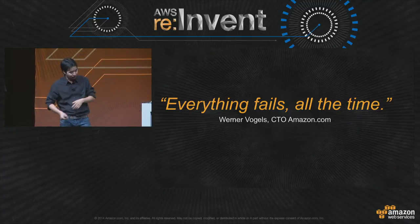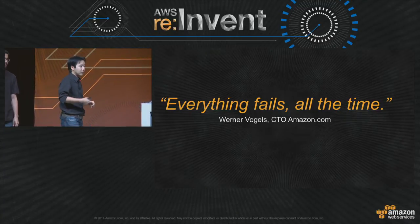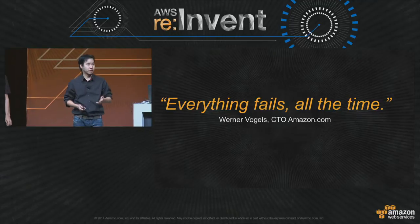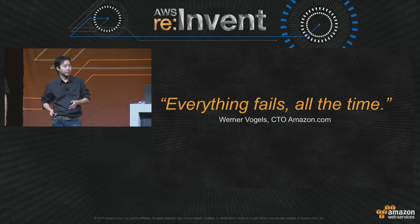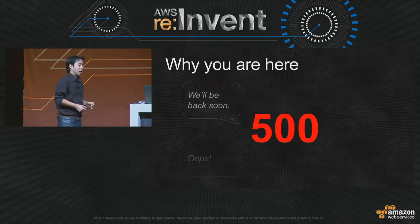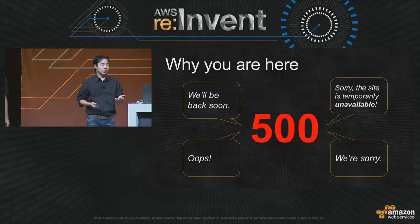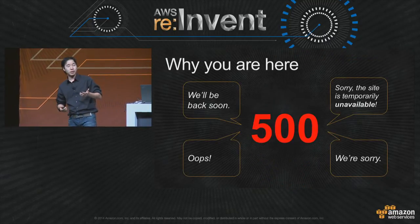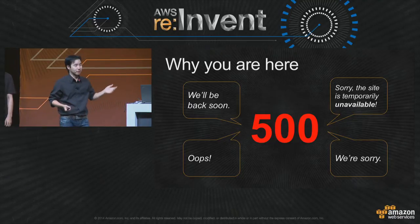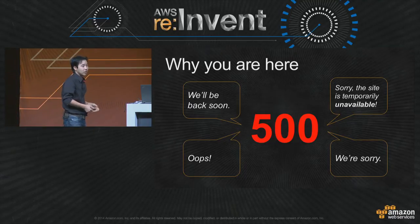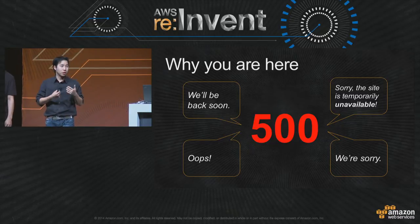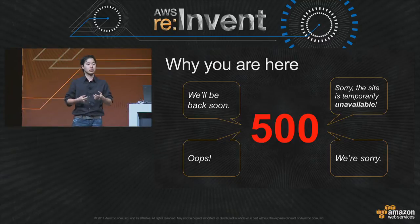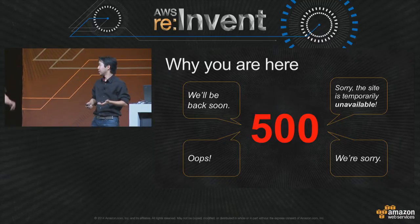If you think about it, your application is in danger of suffering a failure or a catastrophic event at all times. And what happens is your users suddenly see those errors — 'You'll be back soon,' 'Sorry, the website's unavailable,' or simply 'Oops.' You see all these 500 error codes, which are terrible.